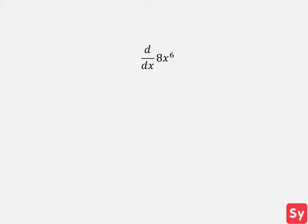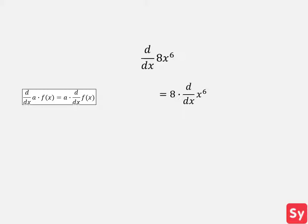Last example, we want to compute the derivative of 8x to the 6th. We see that the function x to the 6th is multiplied by a constant 8, so we can apply the multiplication by a constant rule. This equals 8 times the derivative of x to the 6th.